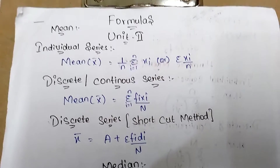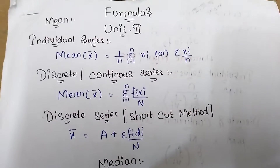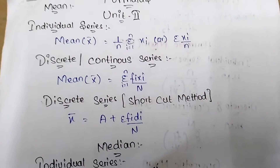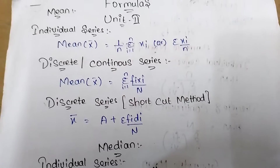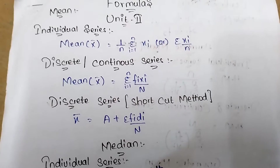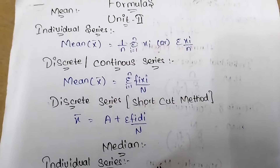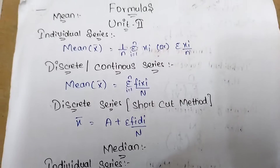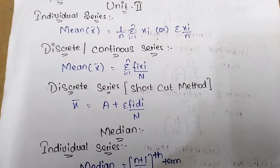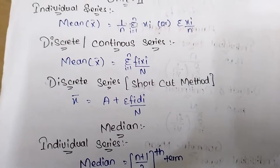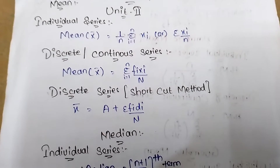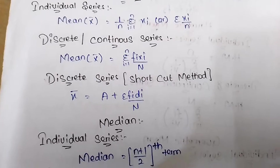Mean, or arithmetic mean: the symbol is x̄ = Σxi / n for individual series. For discrete series or continuous series, mean = Σfi·xi / n, or equivalently Σfx / n. Shortcut method for discrete and continuous series: x̄ = A + Σfdx / n, where A is the assumed mean.